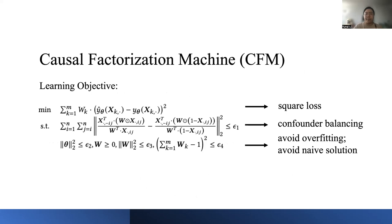Finally, we get the learning objective of our causal FM model. We optimize the square loss under the constraint of confounder balancing and also some general constraints avoiding overfitting and the naive solutions. We optimize the objective function by stochastic gradient descent.